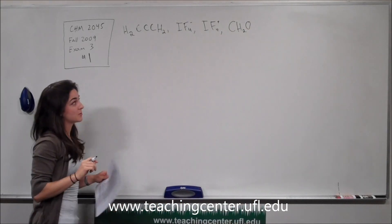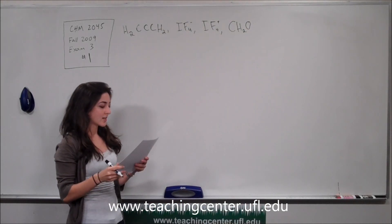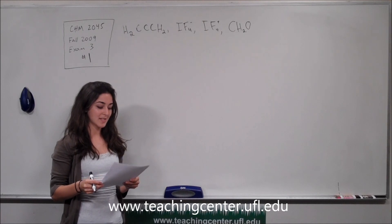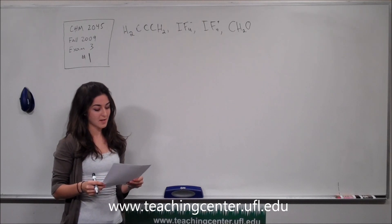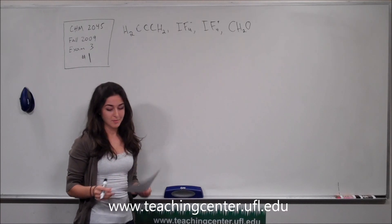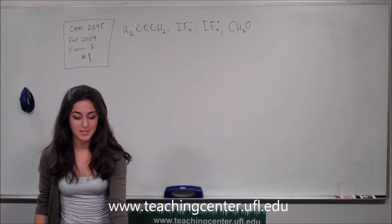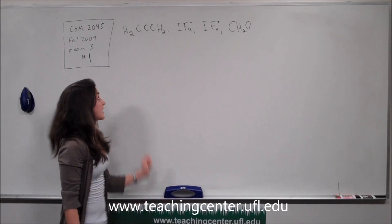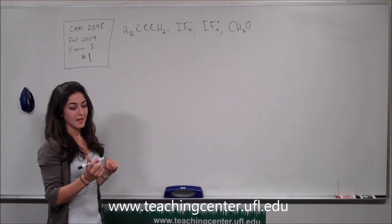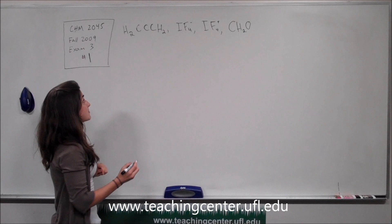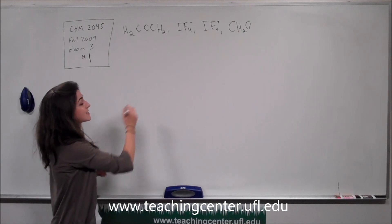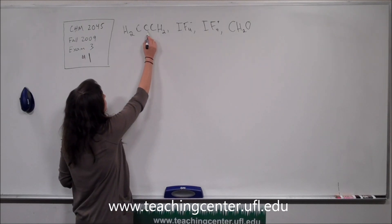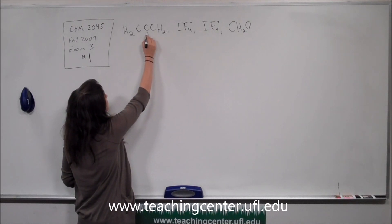Now that we've written down what we know, we're going to look at what the problem asks for — it says to predict the hybridization of the central atom. To predict hybridization, we need to know the structure of the molecule. So we're going to start with the first one. To draw this molecule, we want to identify the central atom, which is the middle carbon.